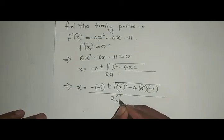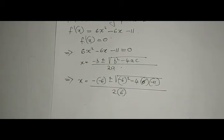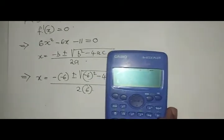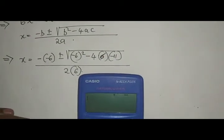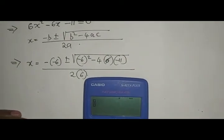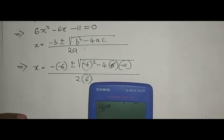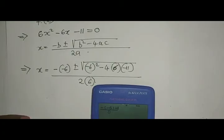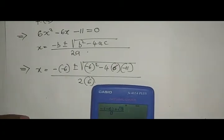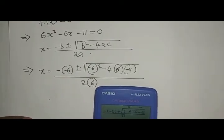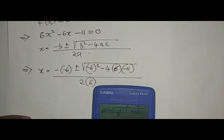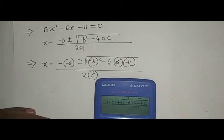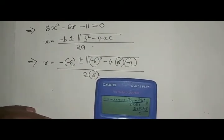Then from there you can use your calculator. Let me just show you how I normally do it. Let me get it closer. Right there, I think you can see it. I normally put my fraction first, then -6 close bracket, plus square root of -6 squared minus 4 into our a is 6, our c is -11, close bracket. Then in the denominator is 2 into 6.